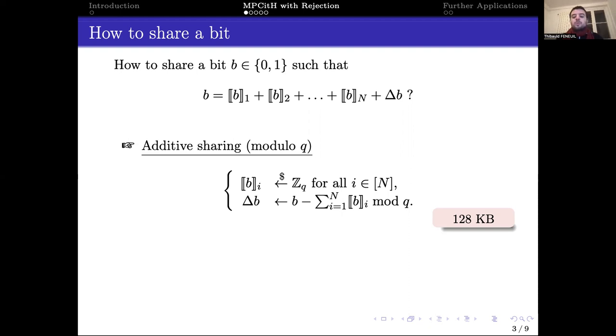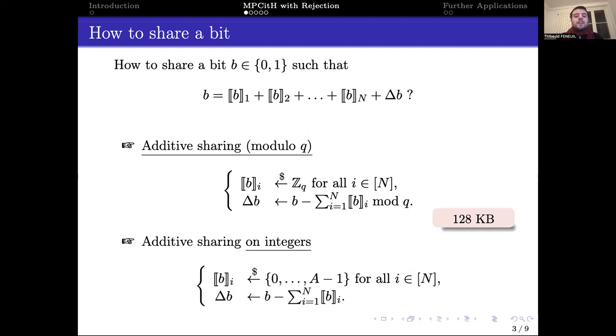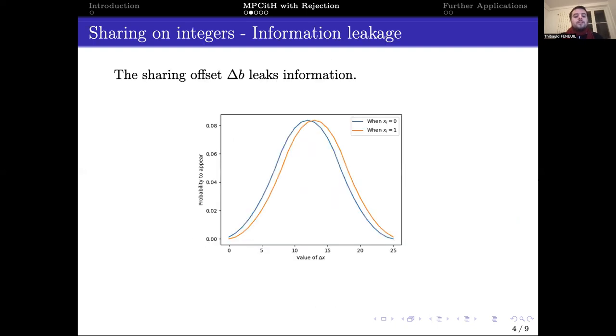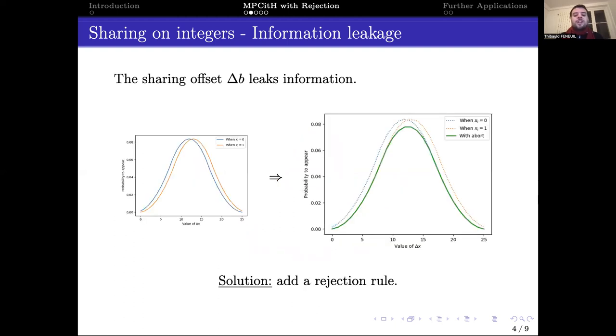In this work, we propose to use another sharing scheme, the additive sharing on integers. Each share is uniformly sampled between 0 and some upper bound A, and the sharing offset is computed with the same equality as before, but without the modulo q. However, such sharing leaks information. The distribution of the sharing offset won't be the same depending on the value of the shared bit. But in this work, we show that we can add simple rejection rules to avoid this information leaking.